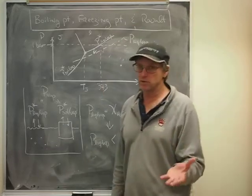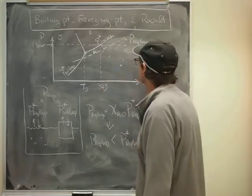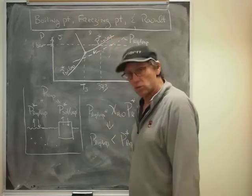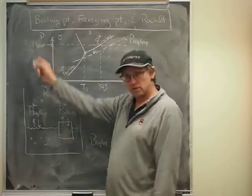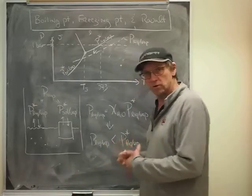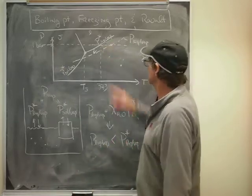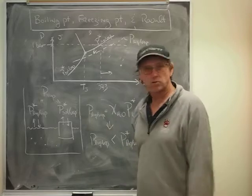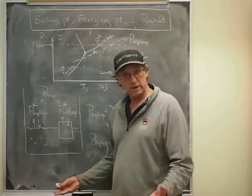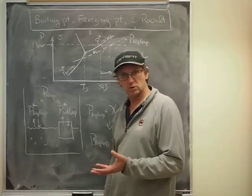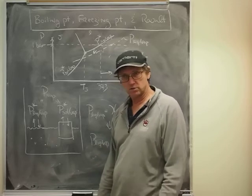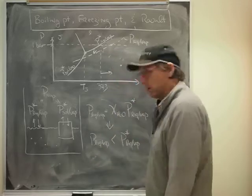And you can see right away there are two conclusions that you can draw from this. One is that now in order to reach ambient vapor pressure when you're trying to boil salty water, you have to raise it to a higher temperature. So that's what we call boiling point elevation.